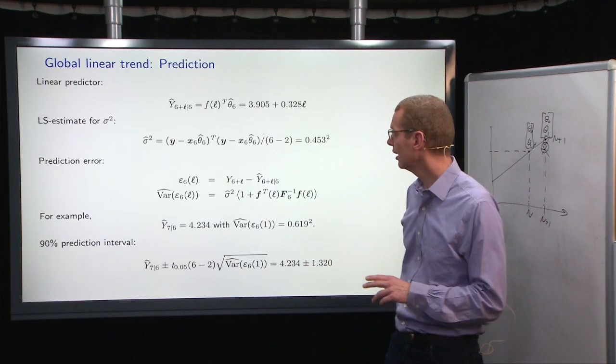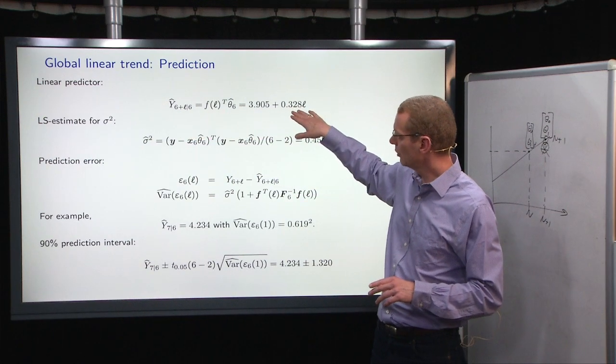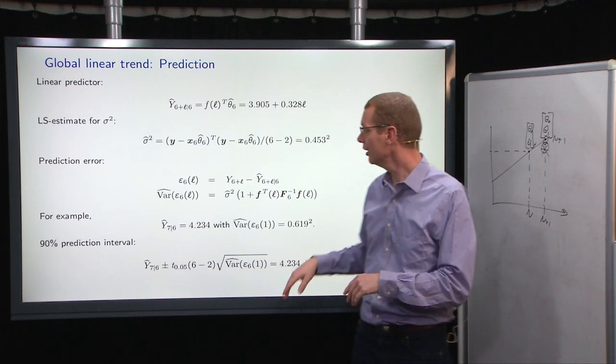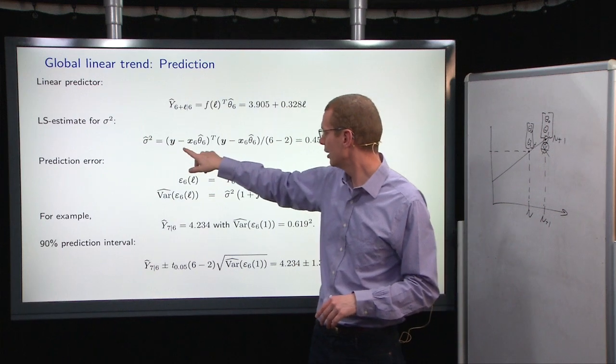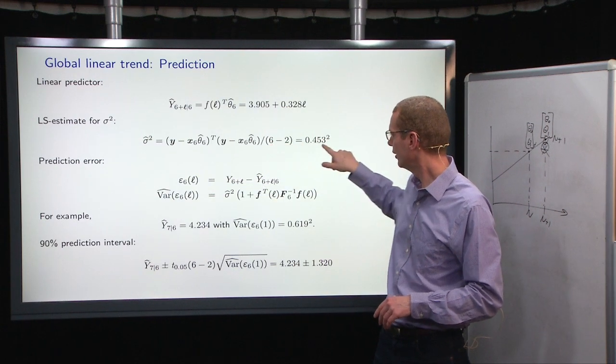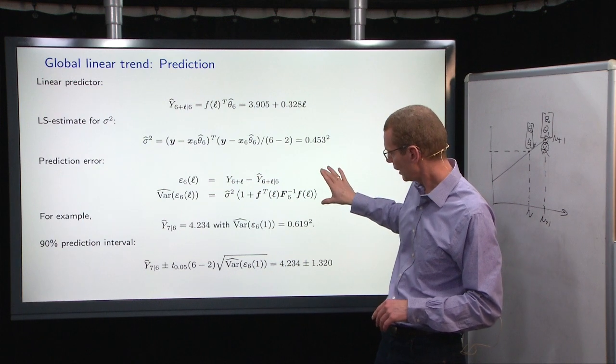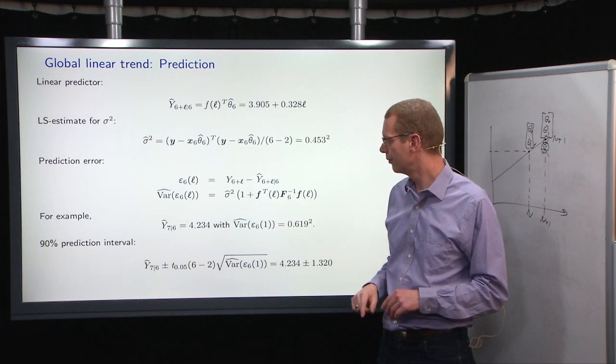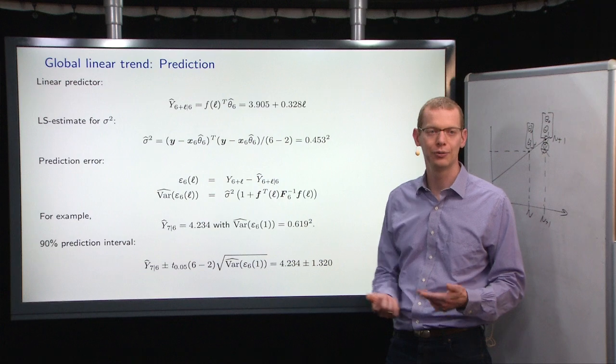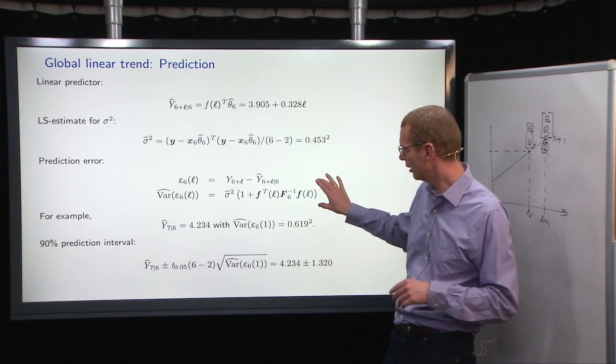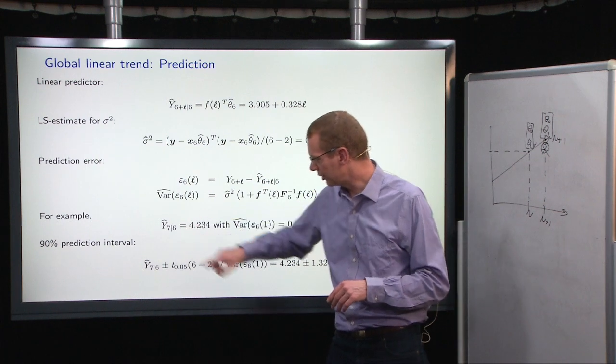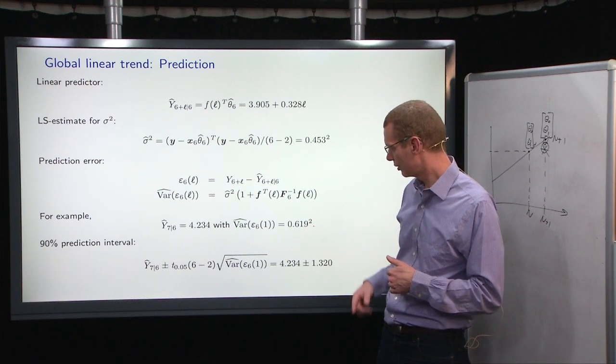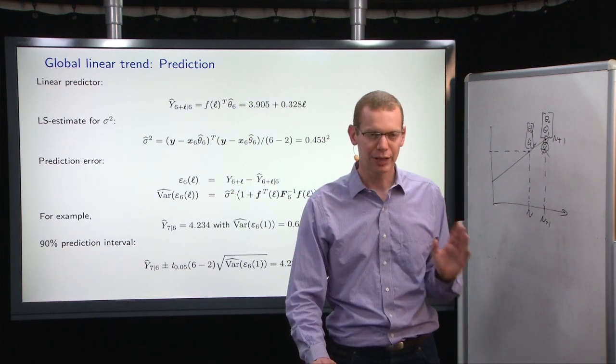This is what we did for the global model last week. We have this F6 here, we have H6, and we can estimate where we are. So far, so good. Now, this was what we did again last week. We then took that estimate and defined our prediction, just a straight line predictor, just like we have over here. And then we have a least square estimator. Last week, I used n as here to get our estimator sigma. And then we can make the prediction error and the variance of that for an L-step prediction error in the usual sense.